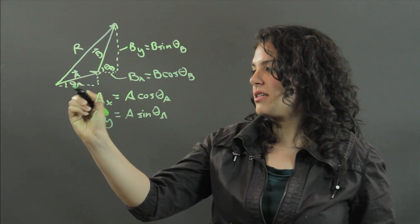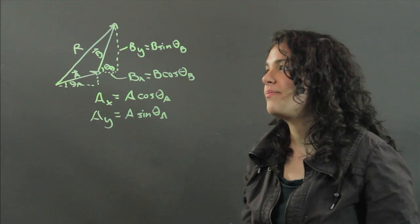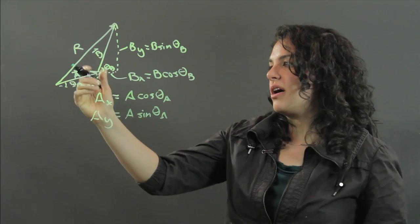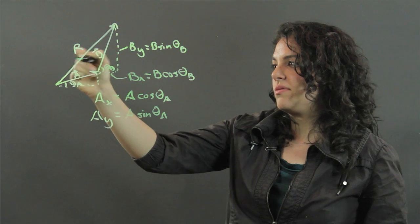And this is your a sub x, and here's your a sub y. So you use these to get r sub x and r sub y, which would be the components of your resultant vector.